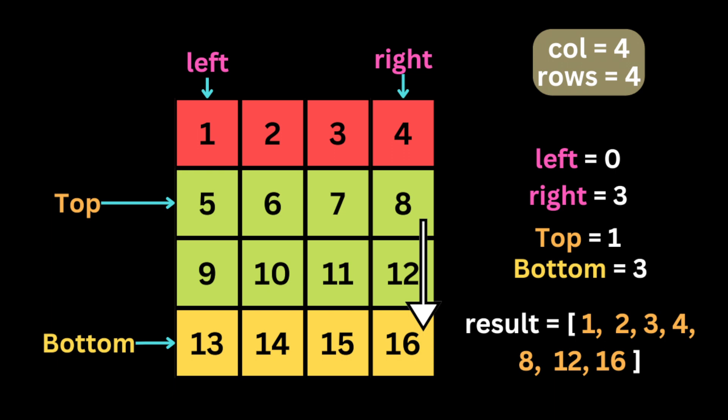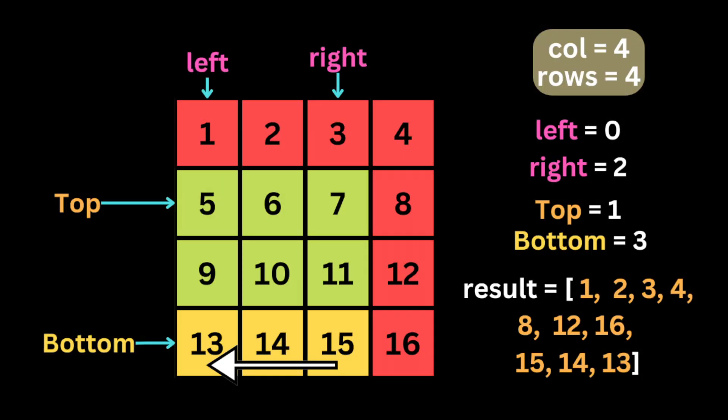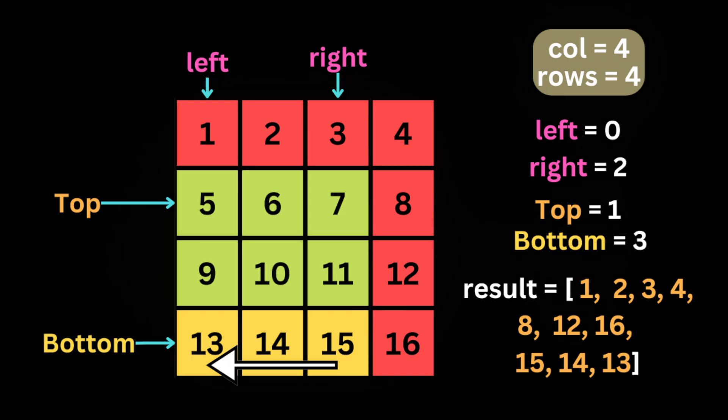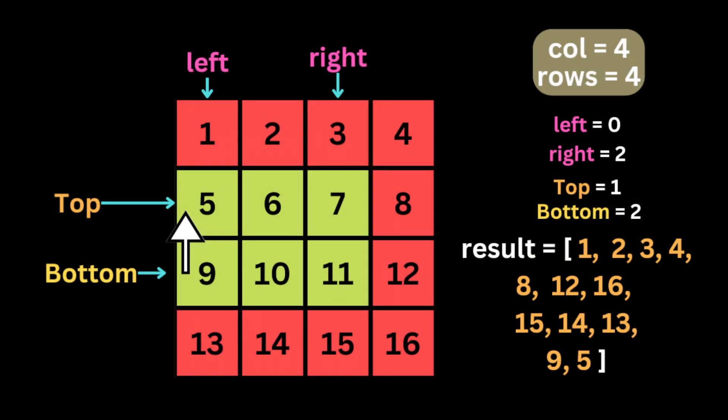Now we start another iteration from the top of the last column to the bottom — visiting 8, 12, and 16. We eliminate the last column by moving the right pointer to the previous column. Then we check if top and bottom have not yet crossed; if not, we push all the numbers in the bottom row from right to left.